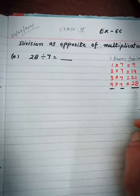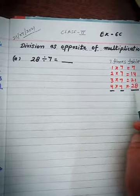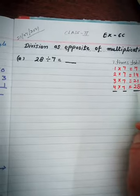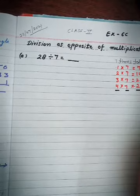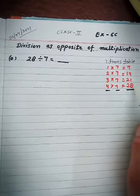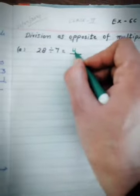This shows that there are 7 fours in 28. This means that if 7 is subtracted 4 times from 28, we will get 0. Therefore, 28 divided by 7 is equal to 4.